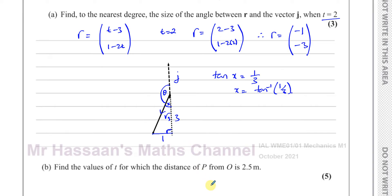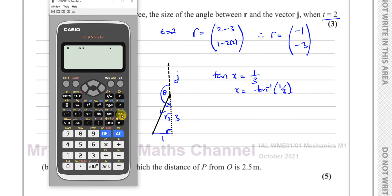So we have inverse tangent of one third and that gives us 18.4349 degrees.